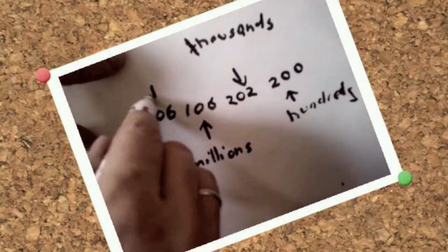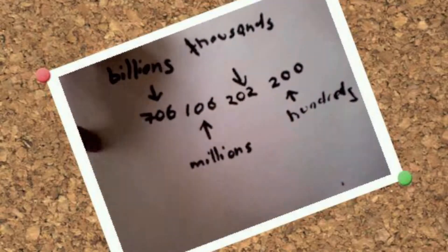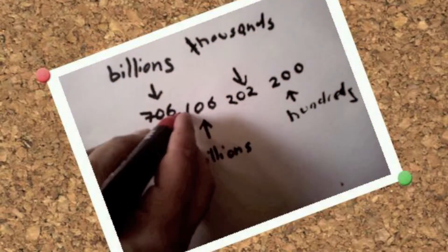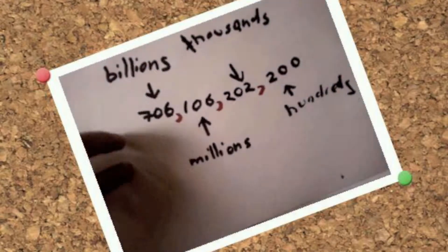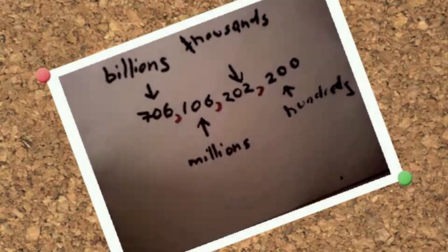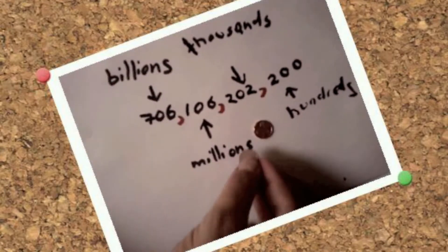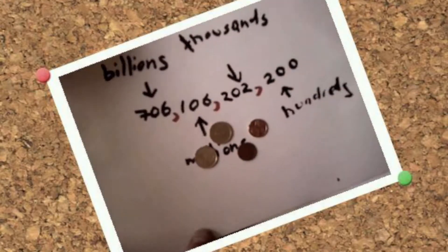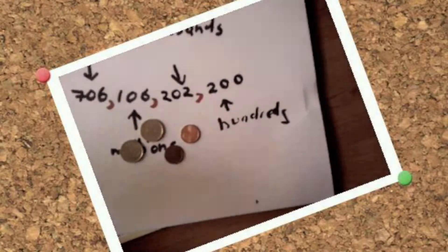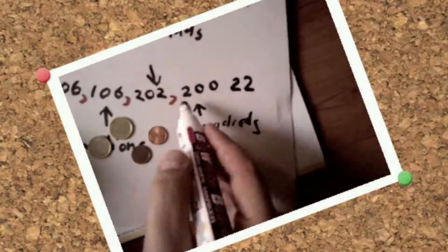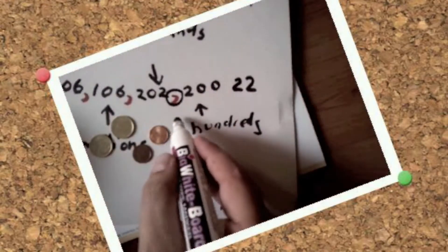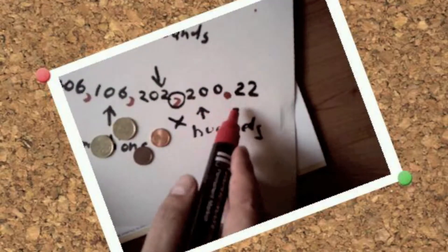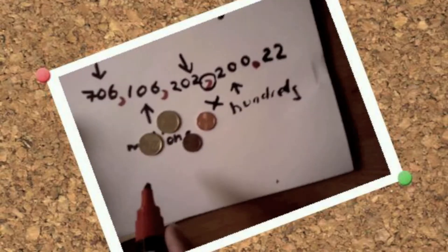The last group is billions, which is not a million million. To separate them, we use commas — but what happens if we have 706,202,200? We can't use a comma. That's confusing. We use a full stop, a period.